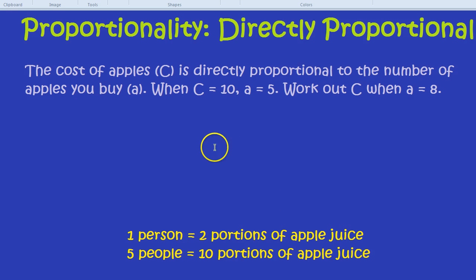It basically means as one thing goes up, the other thing is in the same relation to it. And in the case of directly proportional, as one thing goes up, the other thing goes up. How would we answer an actual question though? Here we have the cost of apples, perhaps to make your apple juice. The cost of apples C is directly proportional to the number of apples you buy, a. When C equals 10, a equals 5. Work out C when a equals 8.